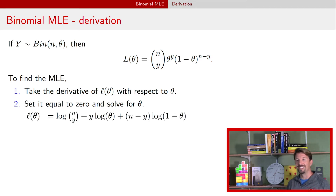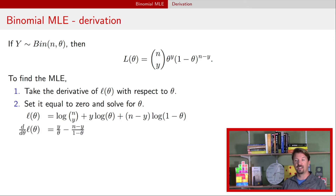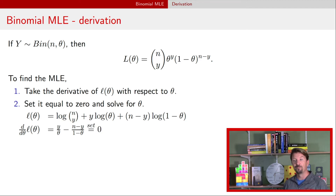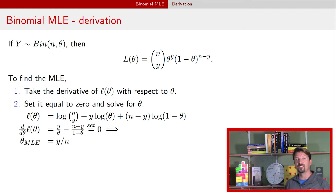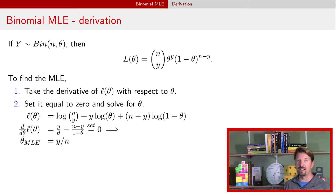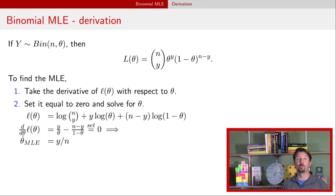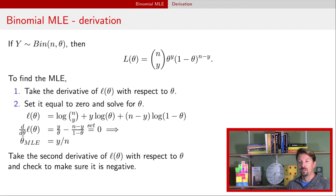Here's an example using the log likelihood for the binomial. We take derivatives with respect to theta, and if you take those derivatives you get these values, set that equal to zero, and solve for theta. If you do so, you find that the MLE for the binomial model is just y over n — that is, the number of successes divided by the number of attempts. This is probably the estimator you would have suggested for the probability of success.